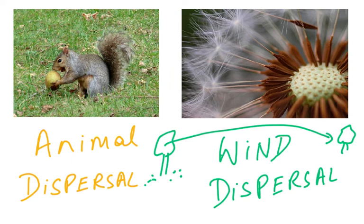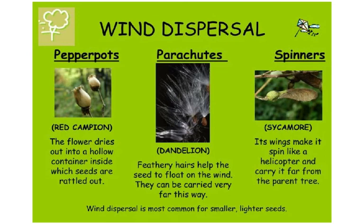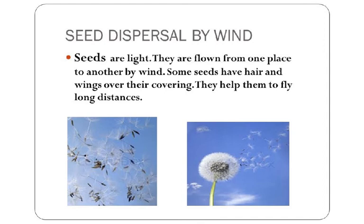In wind dispersal the seeds are very light because they have to be carried by wind - they are buoyant. Wind-dispersed seeds can be gliders, parachutes, flutterers, or helicopters. For example, the dandelion has feathery hairs that help the seed float on wind and be carried very far. The sycamore has wings that make it spin like a helicopter, carrying it far from the parent tree. Wind dispersal is most common for smaller, lighter seeds.